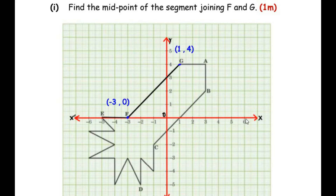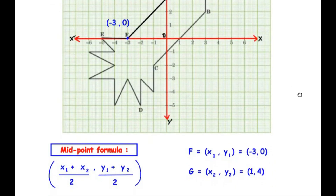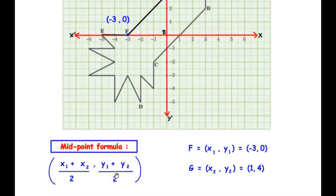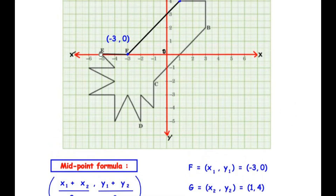F is on the x-axis at negative 3, so the coordinates are negative 3, 0. G is over here — its x-coordinate is 1 and its y-coordinate is 4, so we have written the coordinates of G as 1, 4. Now we have to find the midpoint of this line, so we are going to make use of the midpoint formula: (x1 + x2)/2, (y1 + y2)/2. Let us consider the coordinates of F as x1, y1 and coordinates of G as x2, y2. So x1, y1 is (−3, 0) and x2, y2 is (1, 4).